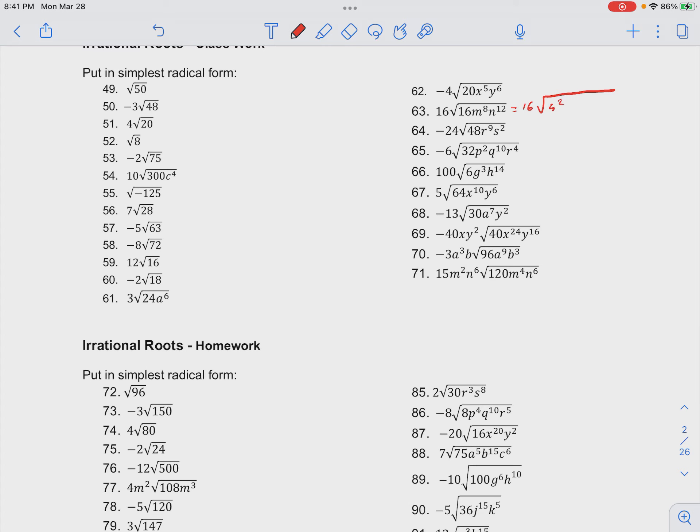m to the 8th we can rewrite as m to the 4th squared, and n to the 12th we can rewrite as n to the 6th squared when we pull out a 2 from the exponent.